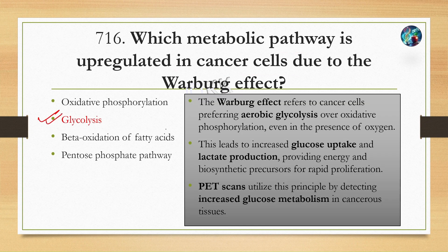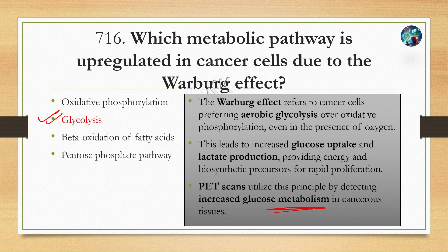Cancer cells prefer anaerobic glycolysis over oxidative phosphorylation even in the presence of oxygen — this is called the Warburg effect. It leads to increased glucose uptake and lactate production, providing energy and biosynthetic precursors for rapid proliferation. PET scans for cancer detection utilize this principle by detecting increased glucose metabolism in cancerous tissues.